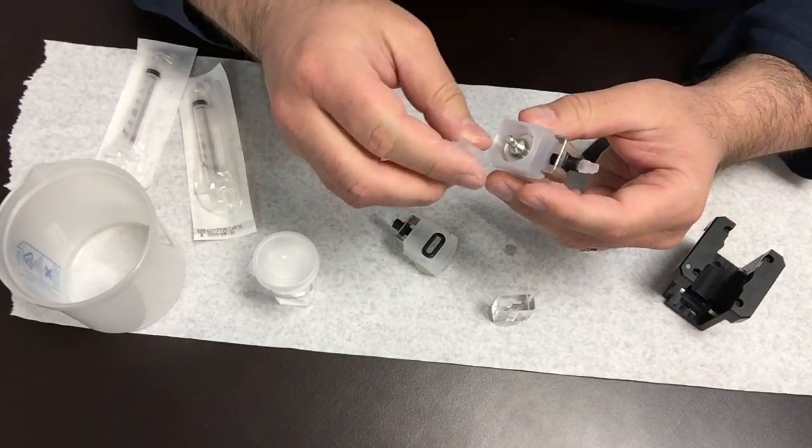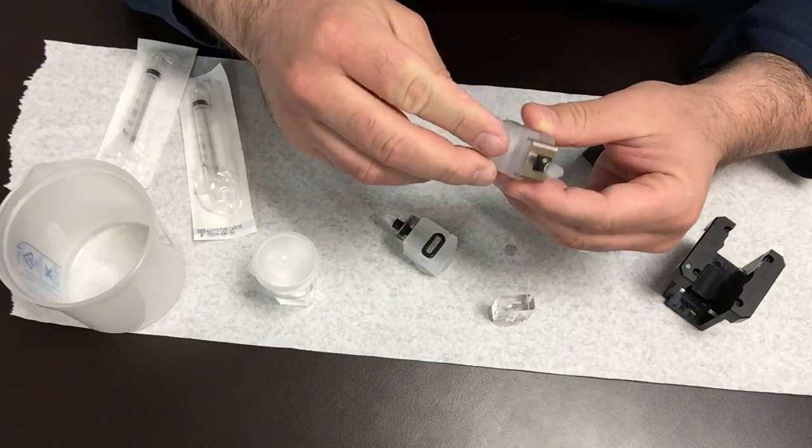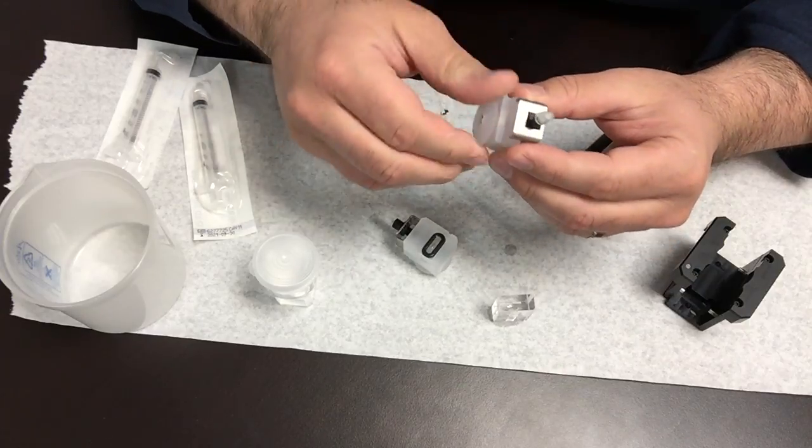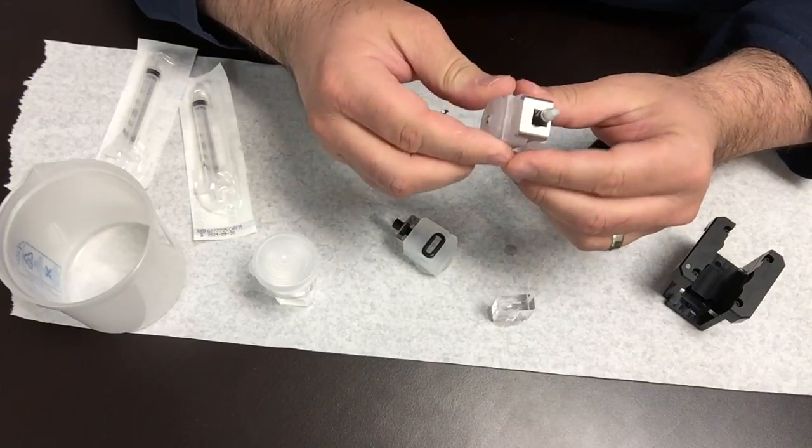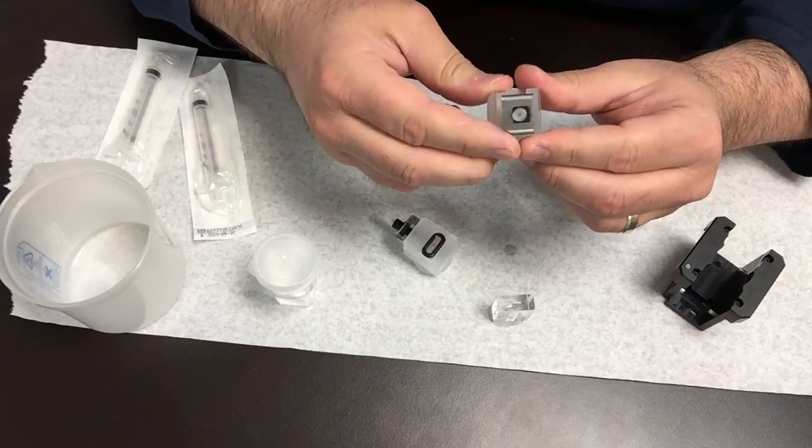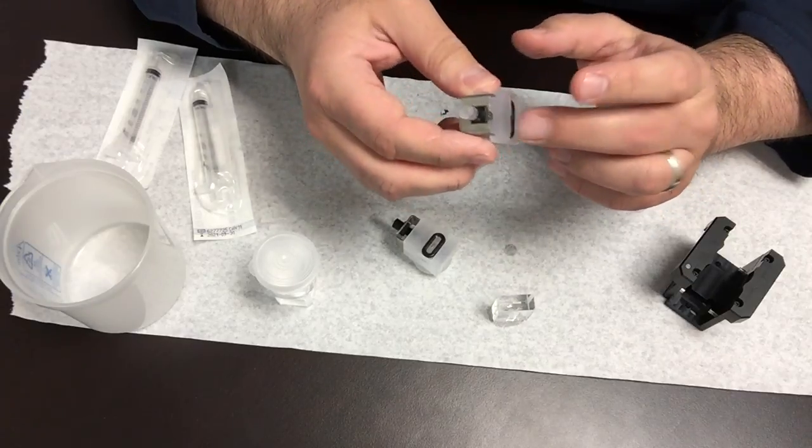The purpose of the curved shaped electrode is to focus the electric field towards the center. That way it reduces the amount of heating when you apply an electric field in a liquid.